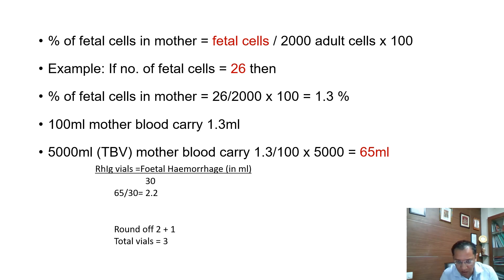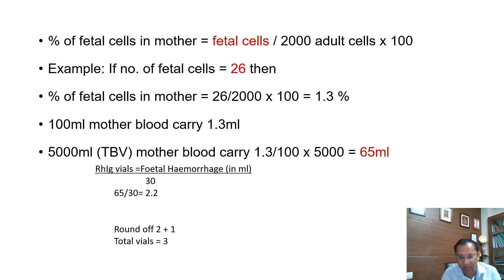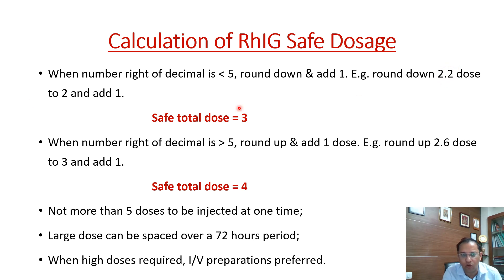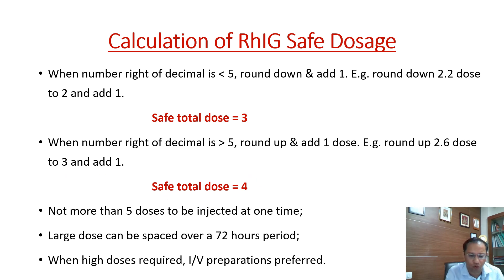Always remember the half-life of RhIg is 25 days. For the safe dosage calculation: if your decimal value is 2.2, round to 2 and add 1, giving 3 vials. If it is 2.6, round up to 3 and add 1, giving 4 vials.